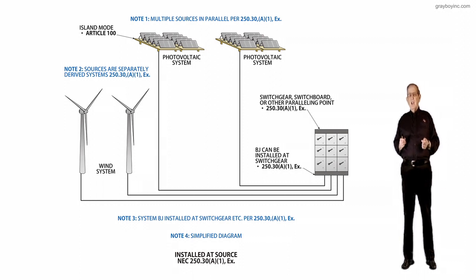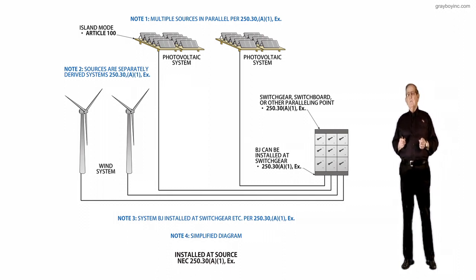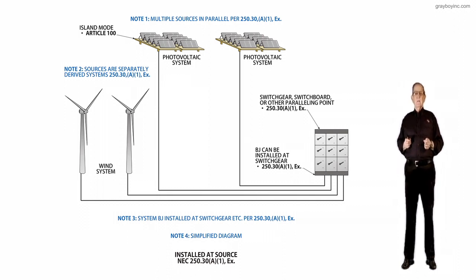The purpose of the change was to provide a new exception to address multiple sources making up a single separately derived system. The requirement would have the system bonding jumper installed at the source or the first disconnecting means. You have that option, either at the source or the first disconnecting means.